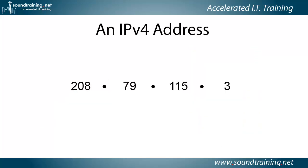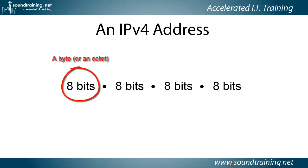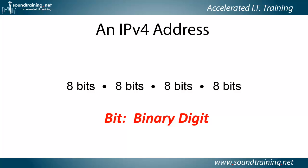Now let's go to an example. Here we see an IPv4 address — 208.79.115.3. Each one of those sections is called an octet or a byte, because they map to 8-bit binary numbers, and there are 8 bits in a byte.